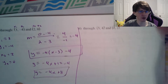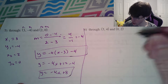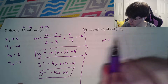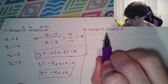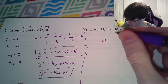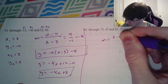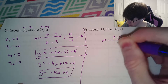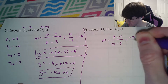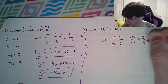Problem number 6: our m is equal to — with x1, y1, x2, y2 — we have 2 minus 4 divided by 0 minus 5. That's going to be negative 2 over negative 5, which is 2 fifths.